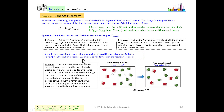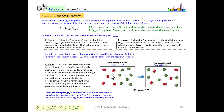It seems like delta S for solution making would always be positive, but hold that thought. In the oxygen and argon case, the intermolecular forces were extremely weak — just weak dispersion forces because they're both nonpolar. In situations where the solutes and solvents show significant intermolecular forces when mixed, it's not always clear how much disorder will be created, if any, in the process of making a solution. So when strong intermolecular forces are present, delta S of solution may not always turn out to be positive.